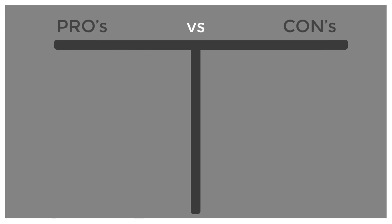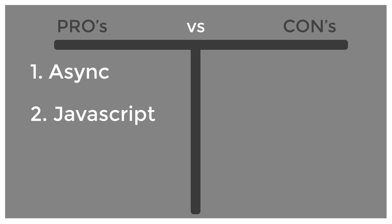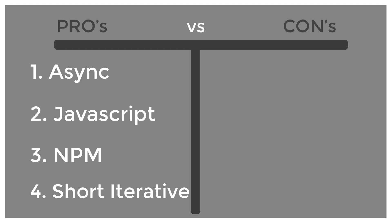Node.js is a runtime environment based off Chrome's V8 engine. It allows you to write server-side code with JavaScript. Starting with the pros: it has async event-driven IO, which helps with concurrent requests on a single thread. It uses JavaScript, which opens the doors for a lot of developers to use Node.js. It has the largest package management system in the world with NPM, completely open source and free. And Node.js is extremely good at short iterative requests because of its architecture — and the majority of apps in the world only need short iterative requests, so Node.js fits the bill for a lot of applications.